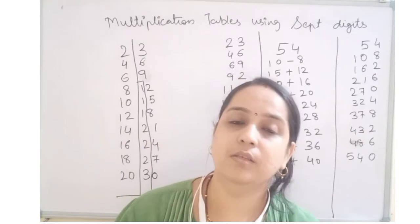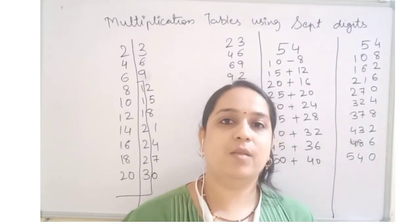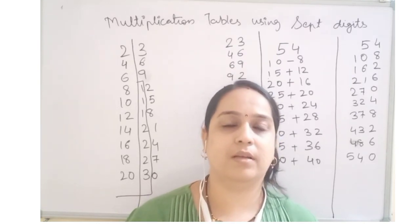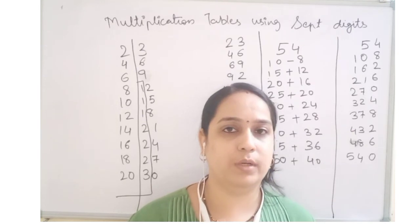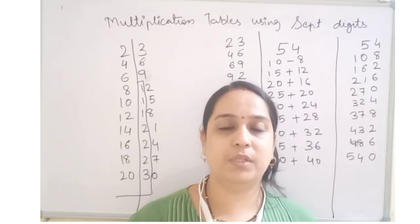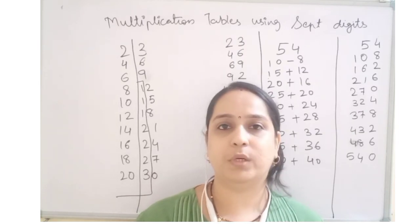This way we can learn so many multiplication tables very quickly. This can be for 3 digits also we can try, 4 digits also we can try. I hope the concept is clear and you understood how to do it. Solve more and more examples, sums and exercises so that you get more grip on this concept. Thank you so much for watching.